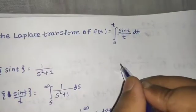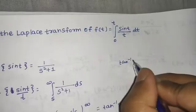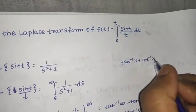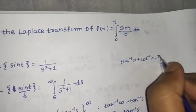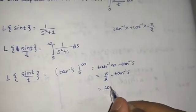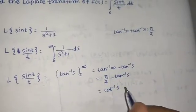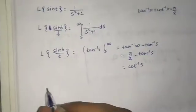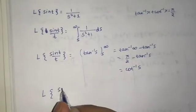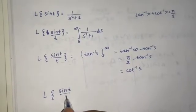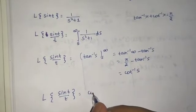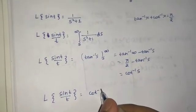We know that tan⁻¹(x) + cot⁻¹(x) = π/2, so π/2 − tan⁻¹(s) can be written as cot⁻¹(s). Therefore, the Laplace of sin(t)/t is cot⁻¹(s).